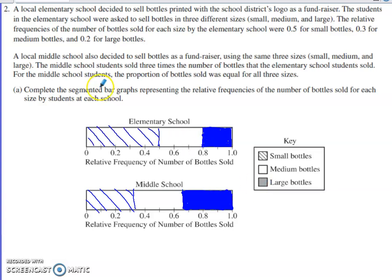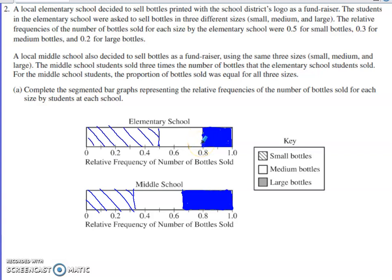For the elementary school segmented bar graph, I'm taking the proportion of small bottles, which was 0.5, so I mark from 0 to 0.5. For medium, it was 0.3, so this endpoint is at 0.5, and adding 0.3 means that portion spans to 0.8. Then the final 0.2 extends from 0.8 the rest of the way to 1.